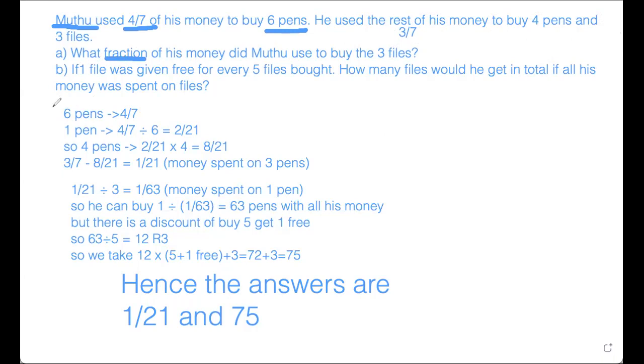So you can see that the cost of 6 pens is 4 over 7 of the total money. So 1 pen is 4 over 7 divided by 6 equals to 4 over 42, which is also the same as 2 over 21.